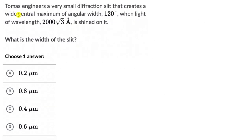Let's look at one more question. Thomas engineers a very small diffraction slit that creates a wide central maximum of angular width 120 degrees when light of wavelength 2000√3 angstroms is shined on it. What is the width of the slit? This looks similar to the previous question, but there is no small angle approximation here — the central maximum angle is actually 120 degrees. Pause the video and try this on your own.